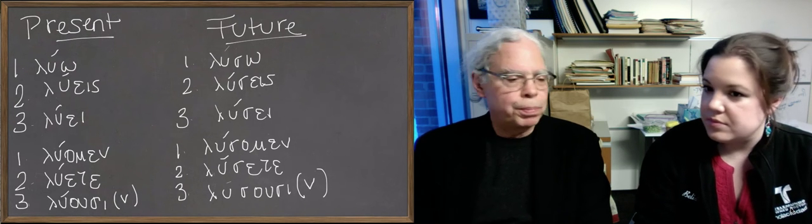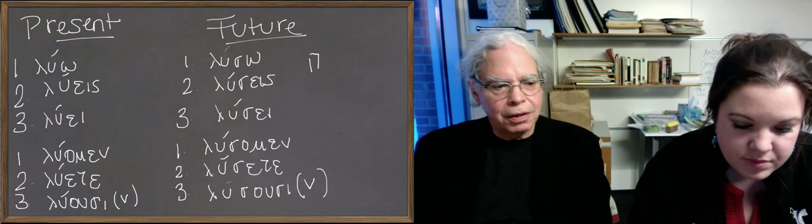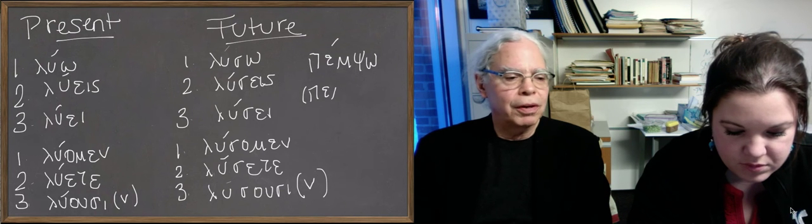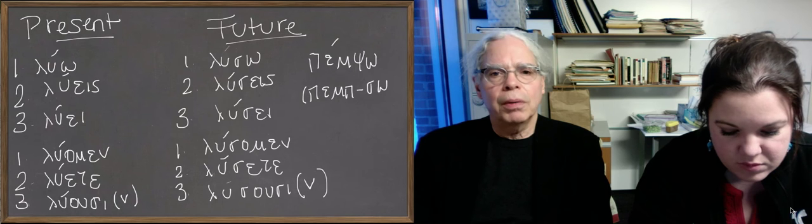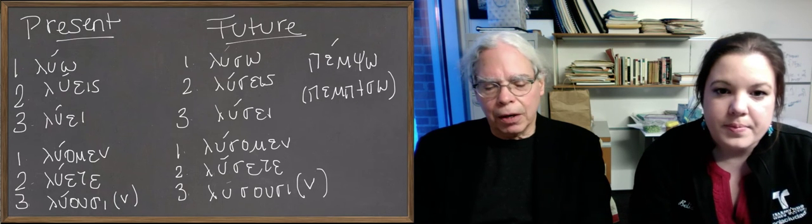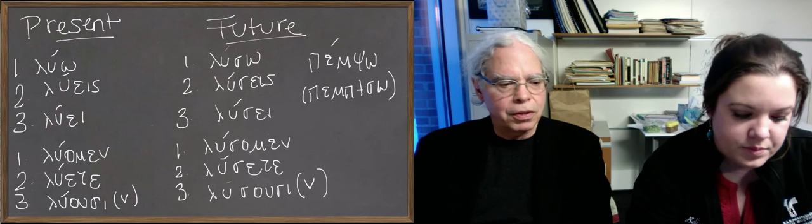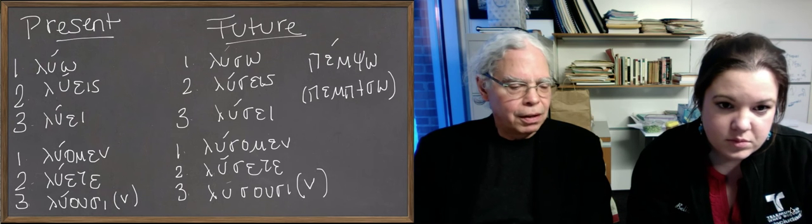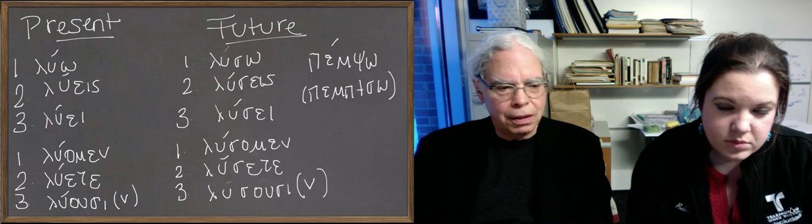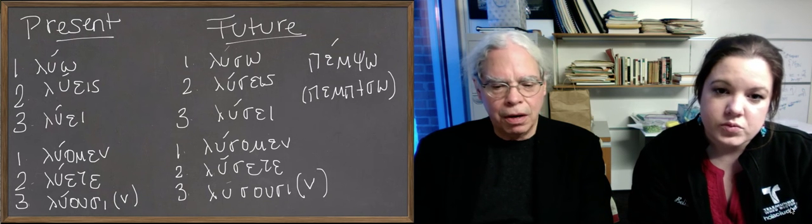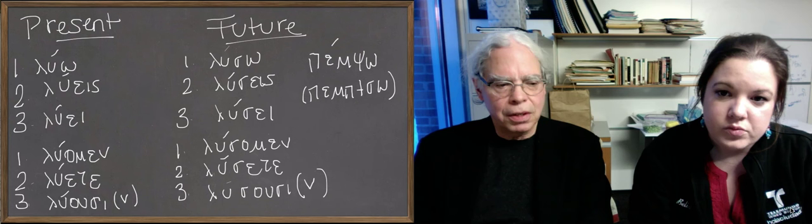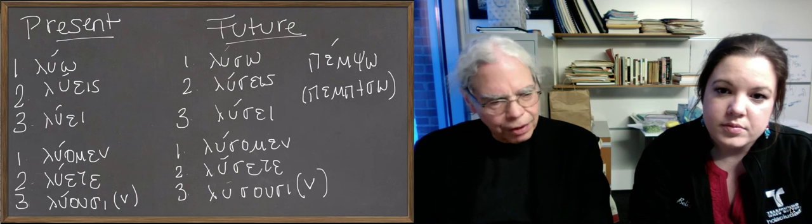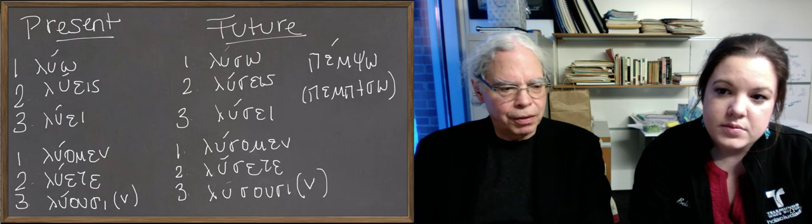So that's pimpso. When there are different consonants at the end of the root, other things happen, and we'll learn more about that as we go along. The key thing is that an s after a consonant devoices it and de-aspirates it. We'll show you how that works in detail. That's the way the future works for the verbs that we know so far.